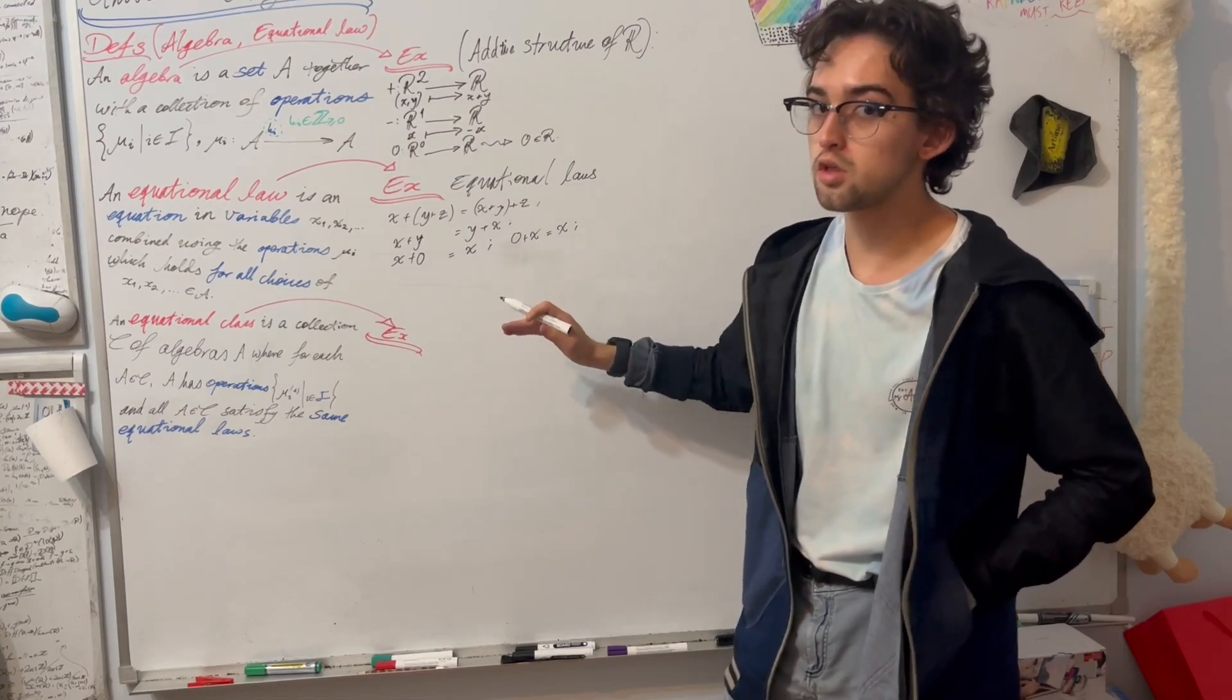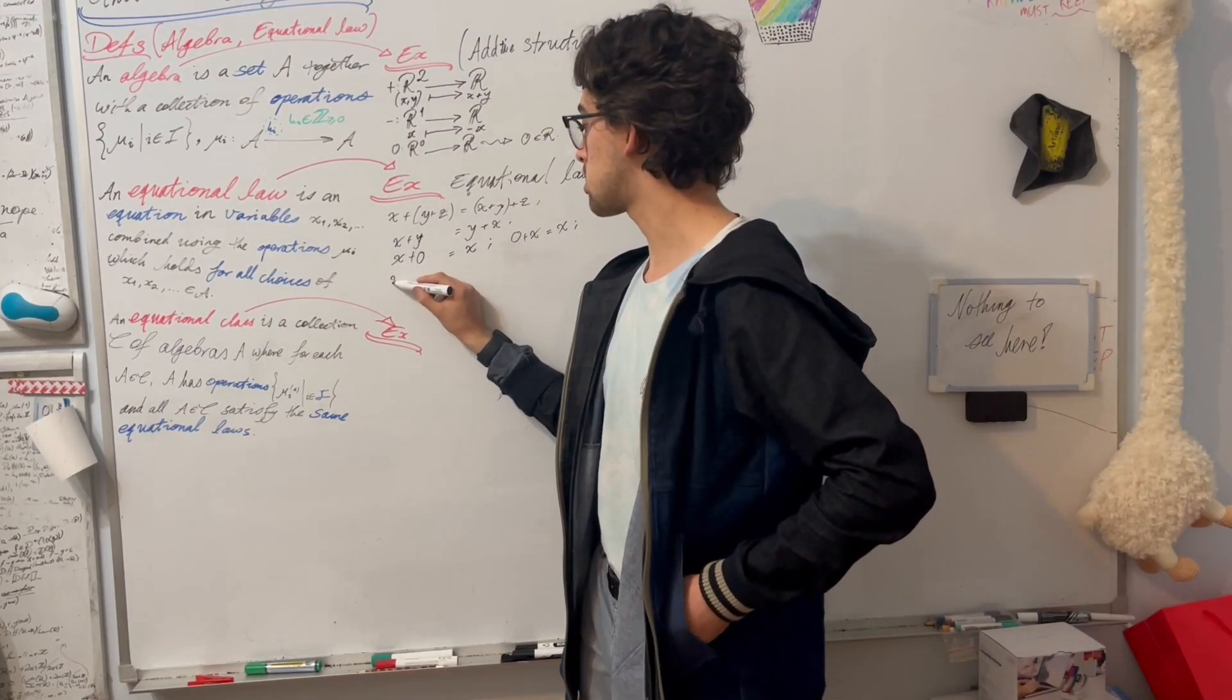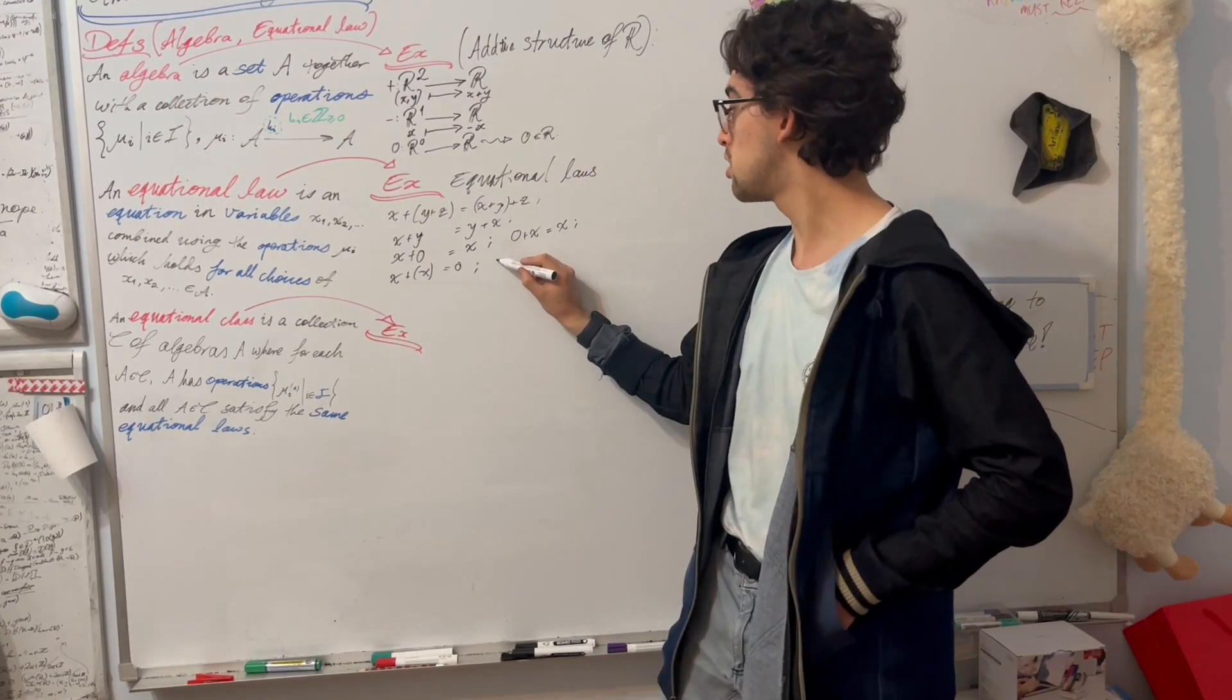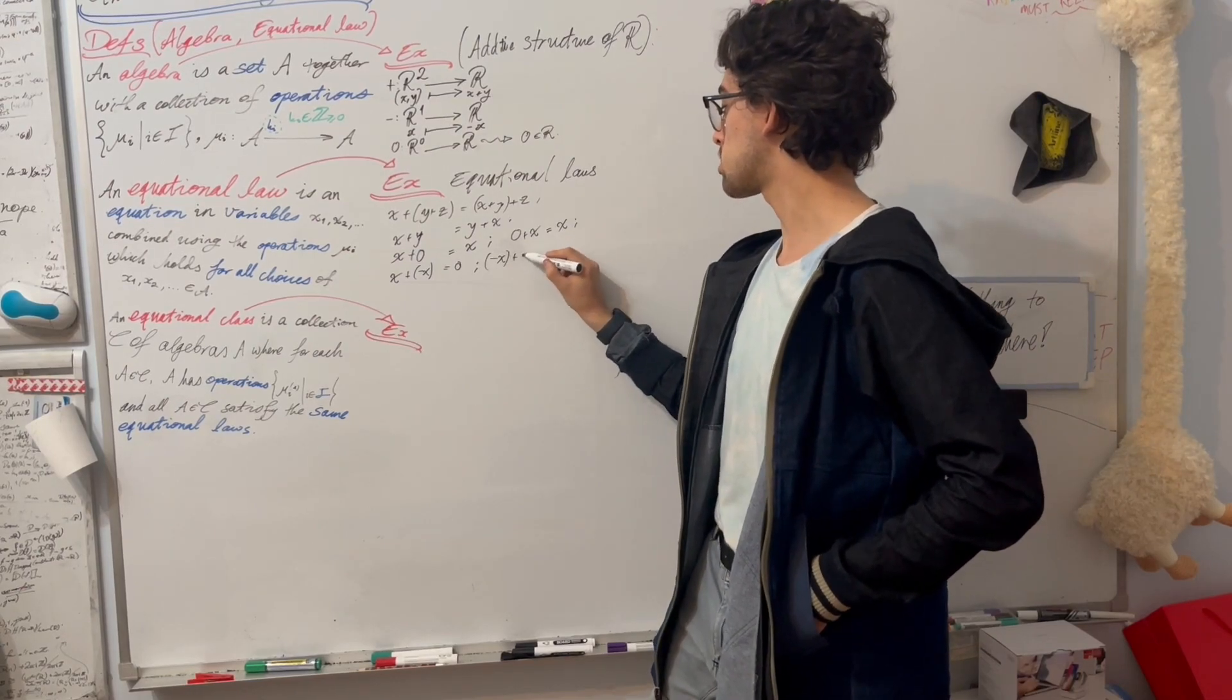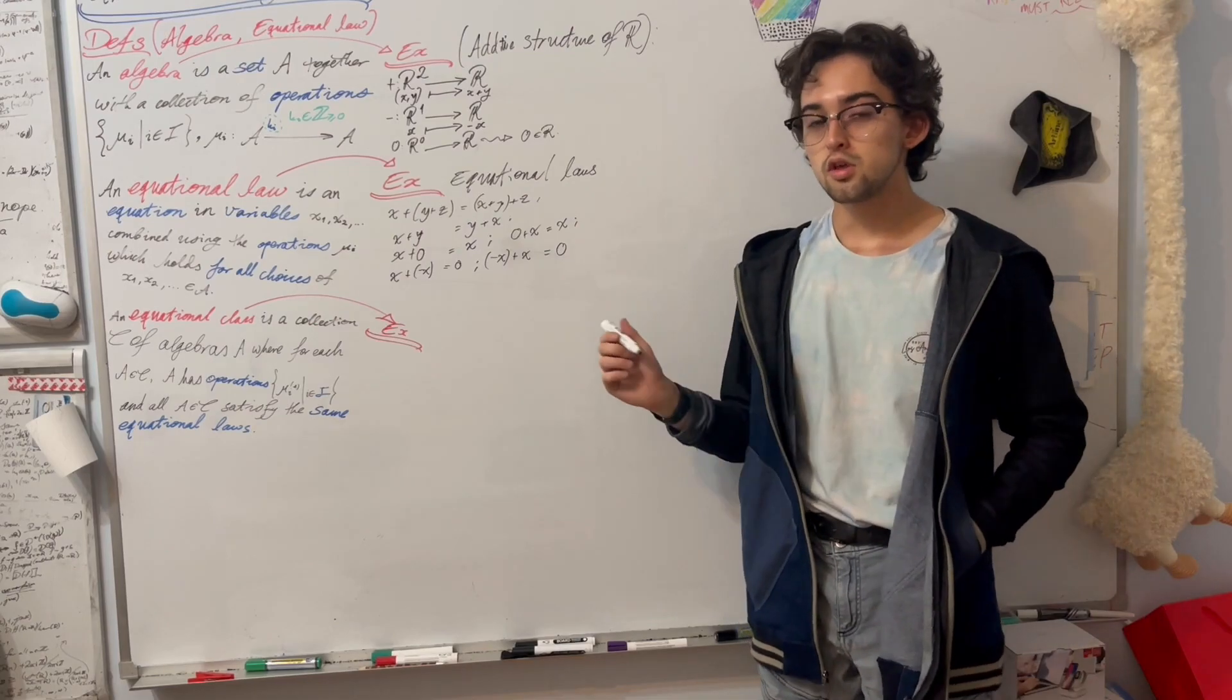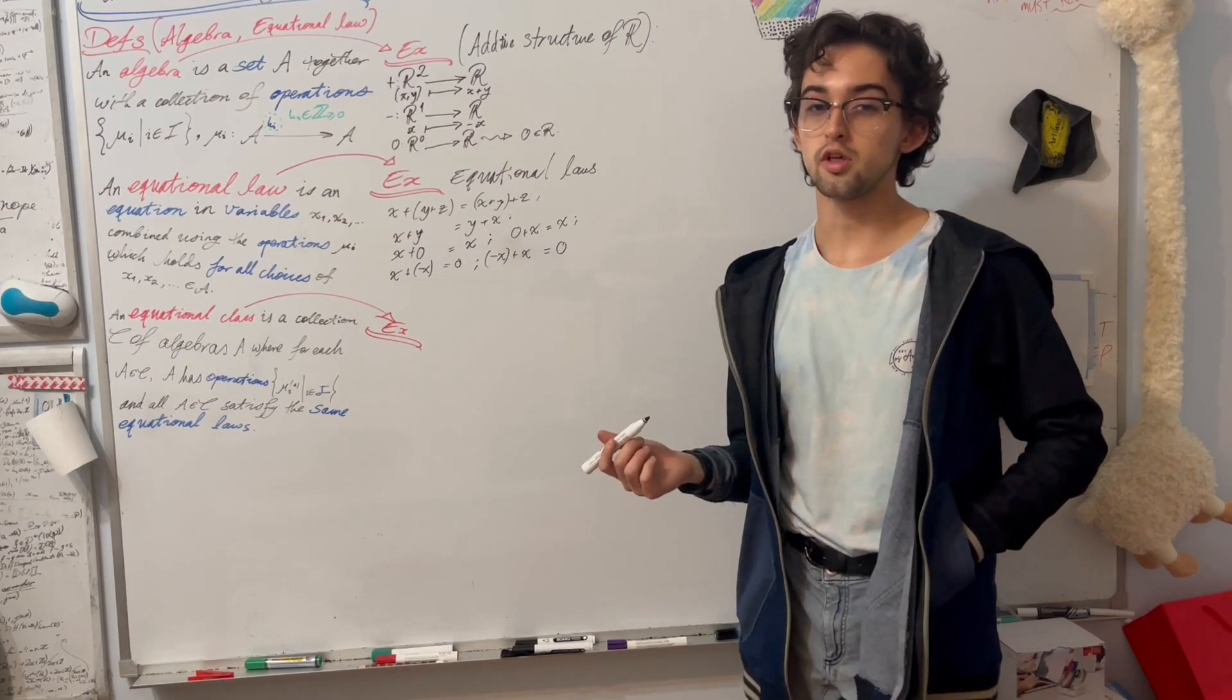And last but not least, we have the negation undoes addition in the following precise sense. x plus the negation of x is equal to 0. And similarly, the negation of x plus x is equal to 0. These laws capture a lot of the additive structure of R, though there may be other ones that I have not listed.